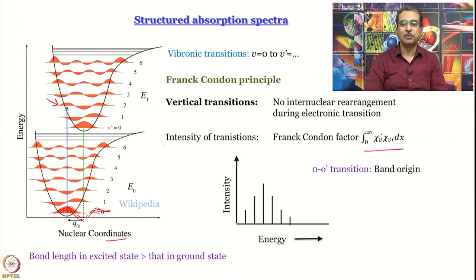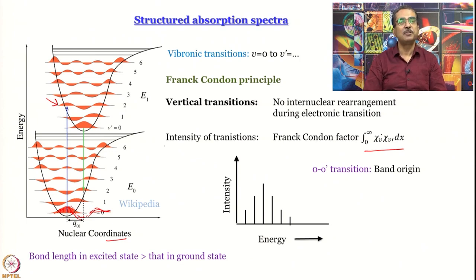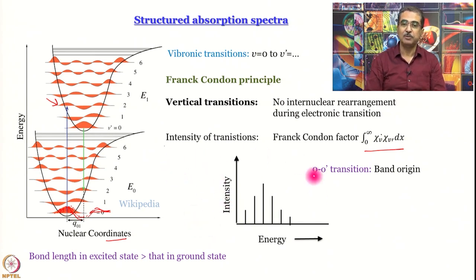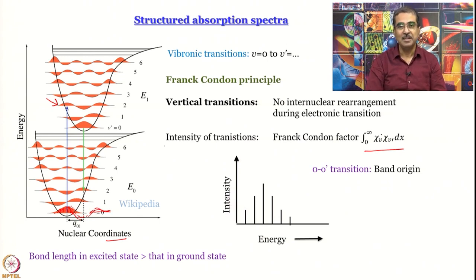The 0–0-dash transition has a name — it is called the band origin. If there is no vibronic structure and it is a pure electronic transition, the only transition you would see is the 0–0-dash. That is the smallest energy vibronic band you can hope to observe. In a situation where the bond length change is large, the intensity of the band origin may be so small that you do not even see it, making finding the band origin a non-trivial problem.